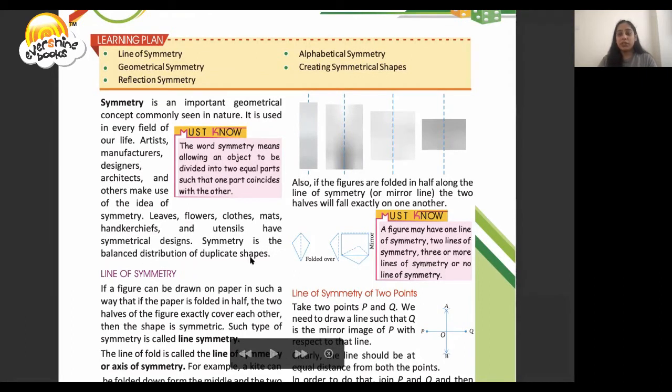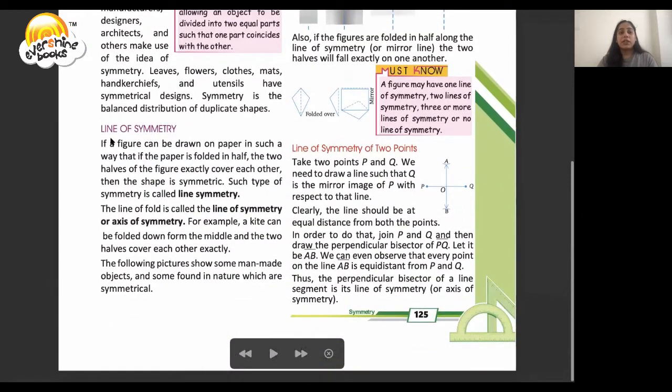So let's see what's the line of symmetry. If a figure can be drawn on paper in such a way that when the paper is folded in half, the two halves of the figure exactly cover each other. If we draw a figure on paper and fold it at the midpoint in half, such type of symmetry is called line symmetry.